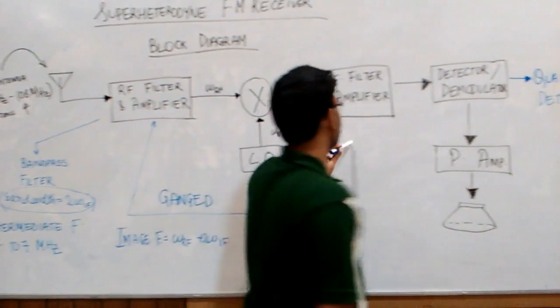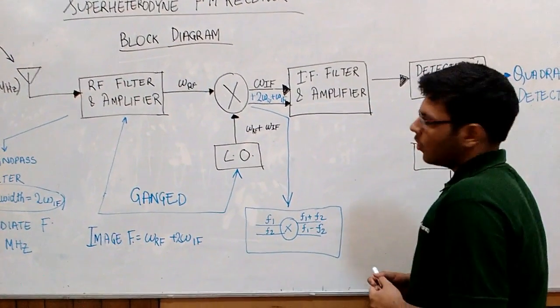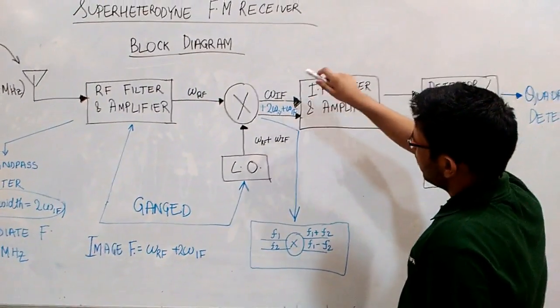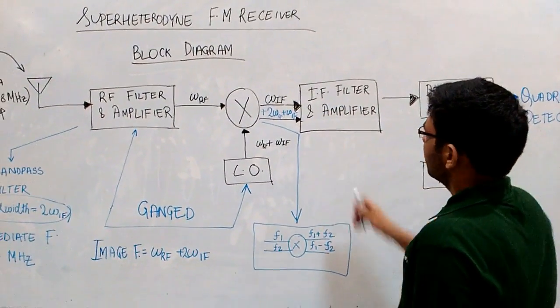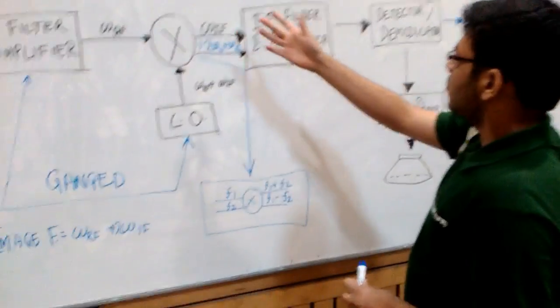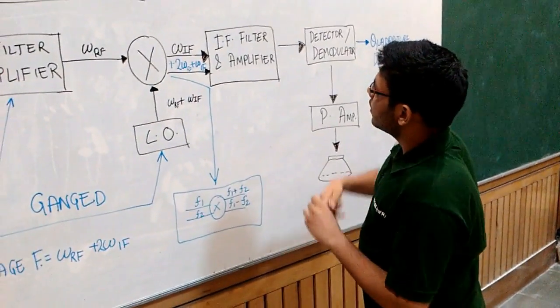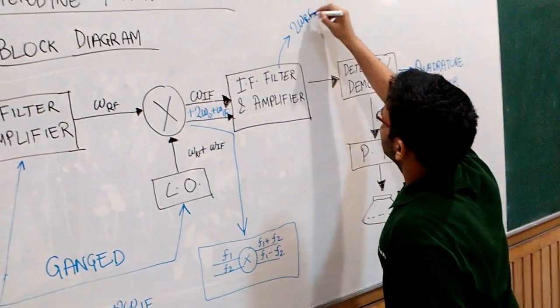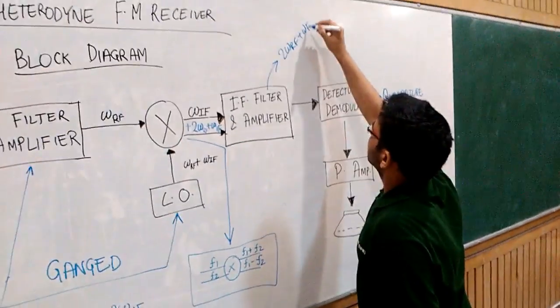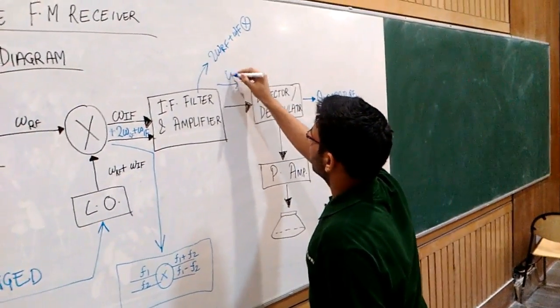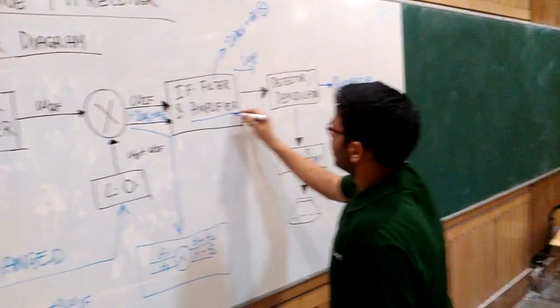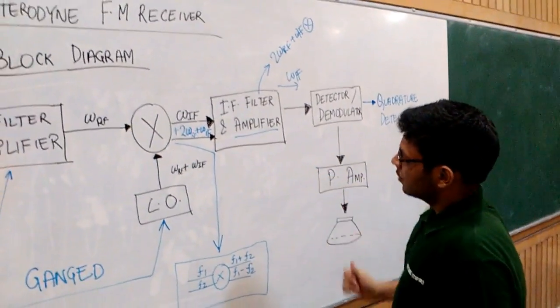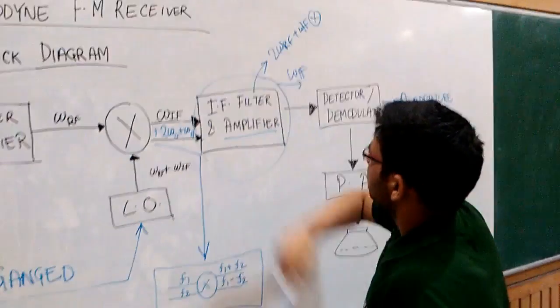Then comes an intermediate frequency filter and an amplifier. So we saw that the mixer is producing two outputs: omega IF and two omega RF plus omega IF. But our basic purpose of superheterodyne receiver is to work on a particular frequency. So what this IF filter does is that it rejects two omega RF plus omega IF. It rejects and passes through omega IF only. After amplifying, this amplifier further enhances the intensity of the input signal. So this is a very important step of our receiver circuit.